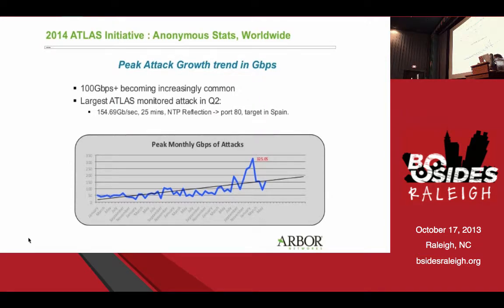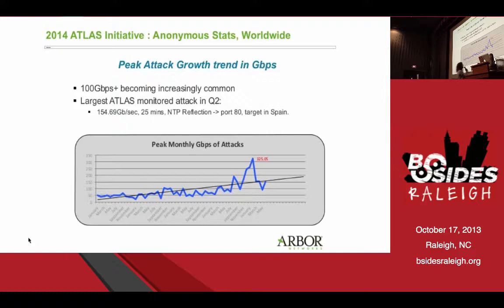Arbor Networks has an interesting infrastructure known as Atlas. They have relationships with something like 200-plus service providers that allow them to gather sampling flow data to identify attacks around the world. From Q2 2014, they had a 155 gigabit attack. The peak they saw was back in late January — those 300 gigabit distributed denial of service attacks.